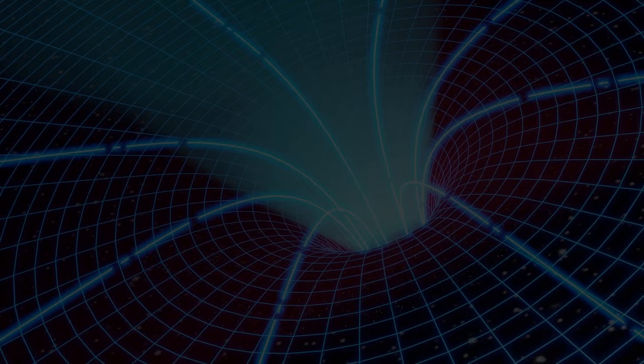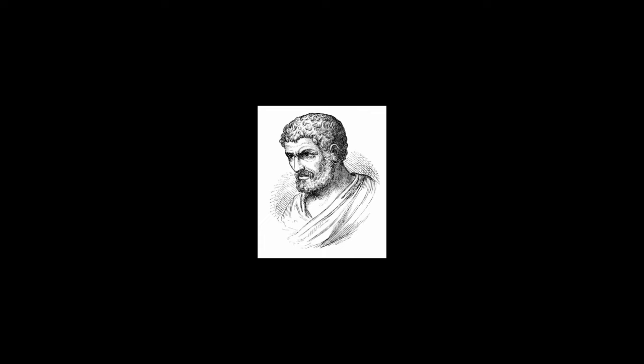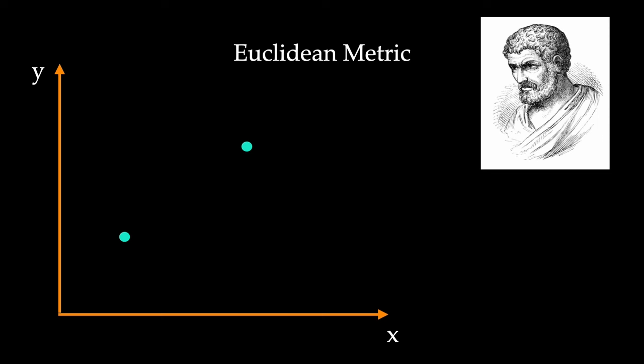Relativity is all about metrics. Whenever we talk about the physics of spacetime, the term metrics will pop up. Metrics are used to measure distances in space. The most simple metric we can think of is the Euclidean metric. Let's take a look at two-dimensional space with x- and y-coordinates. In this space, there are two points, P1 and P2, where P1 has coordinates x1, y1 and P2 has coordinates x2, y2.